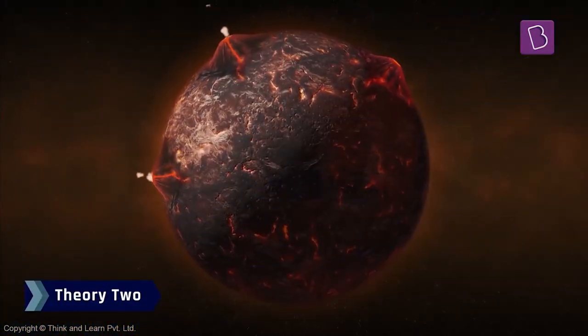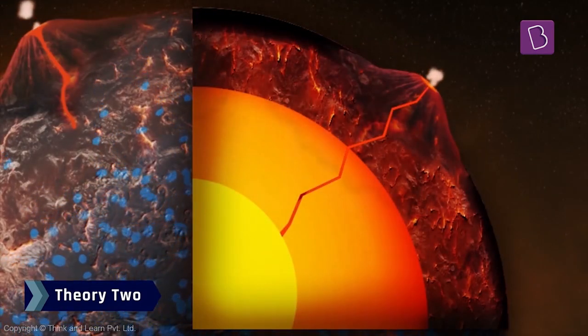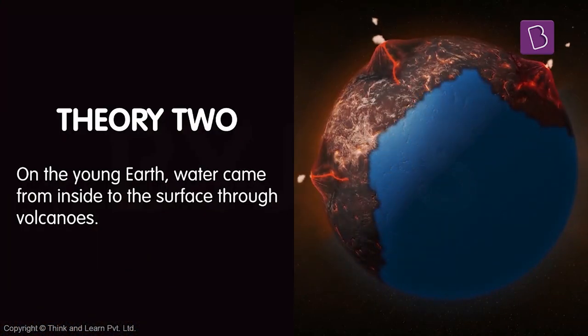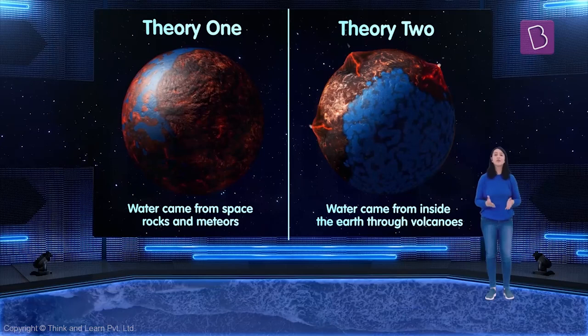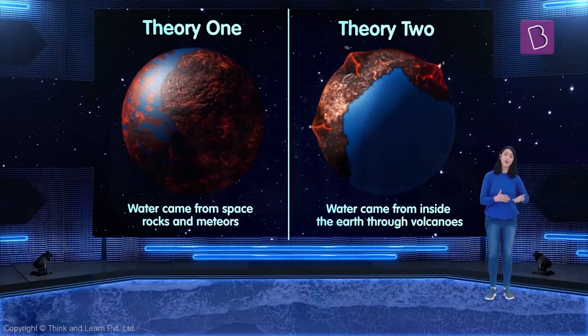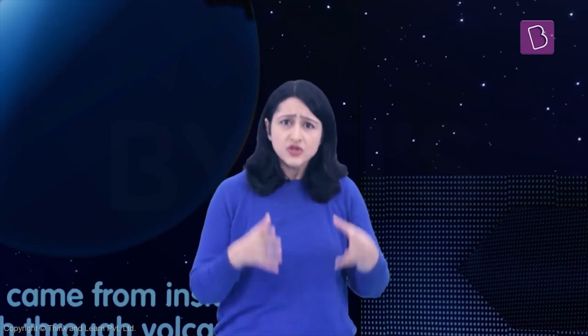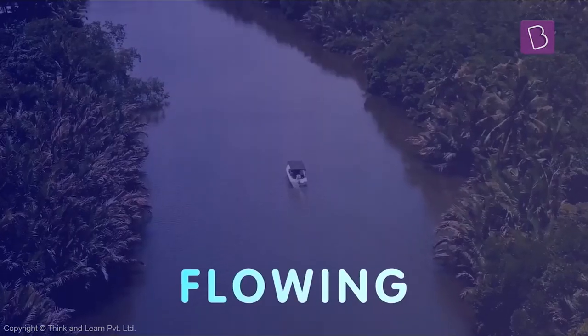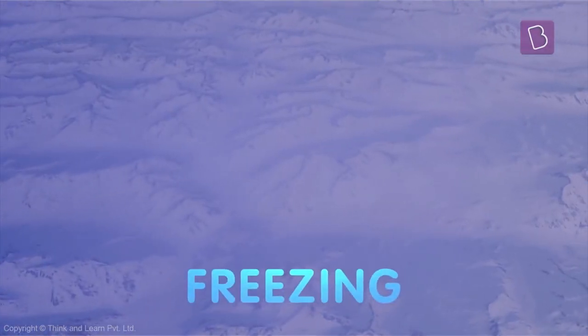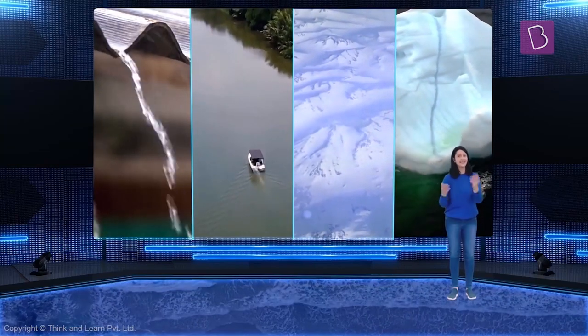The second theory suggests that on the young Earth, water came from inside the Earth to the surface through volcanoes. Either way, it proved to be a miraculous event because, as we already know, life just wouldn't be possible without water. Today, all those billions of years later, the same water is still around, trickling, flowing, freezing, and floating. So water has indeed lived a long life but in different forms.